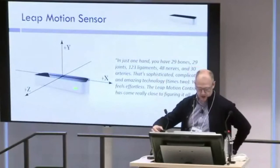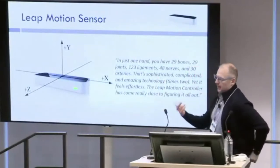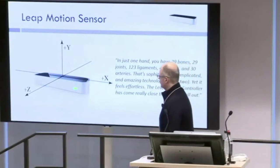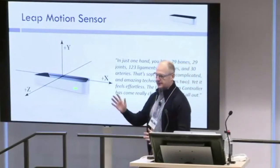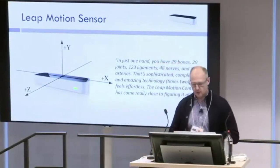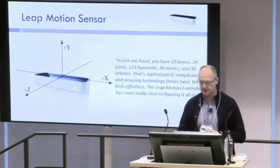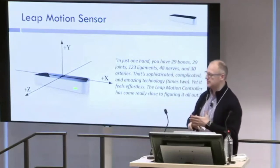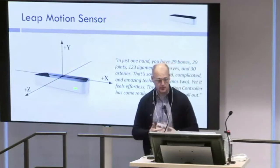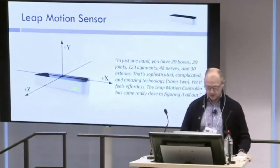The Leap Motion is a 3D hand motion sensor. It uses a Cartesian coordinate system — X, Y, and Z — giving you roughly 100 frames per second. We use this to play the game.